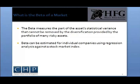An asset has a beta of zero if the returns change independently or are non-correlated to changes in the market's returns. A positive beta means that the asset returns generally follow the market returns, while a negative beta means the asset returns generally move in the opposite direction of the market returns. By definition, the market itself has a beta of one.